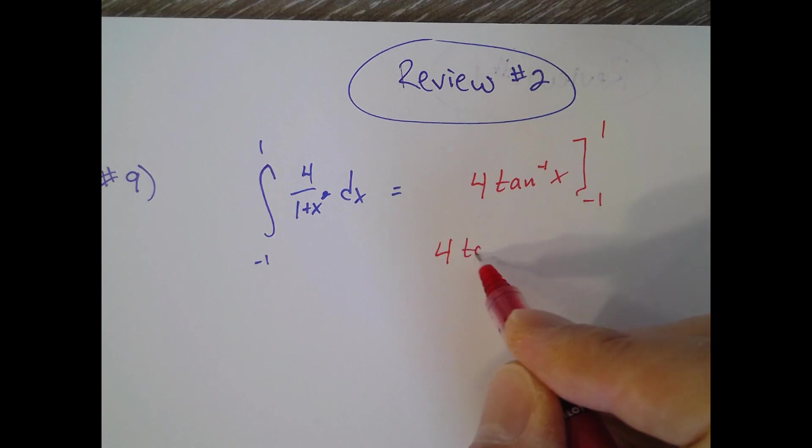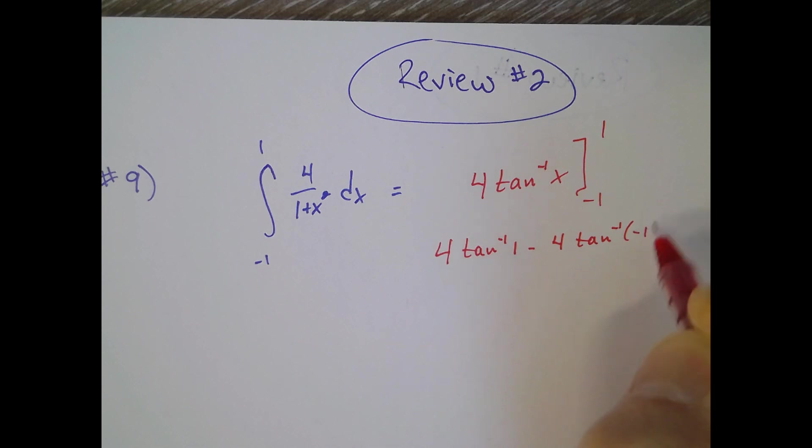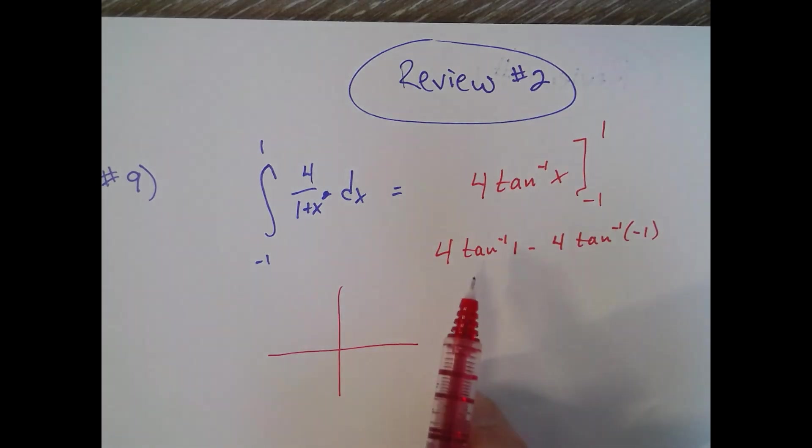Four inverse tangent of one minus four inverse tangent of negative one. So what is the inverse tangent of one? Anytime you're using an inverse trig, it's always asking what angle has a - in this case, what angle has a tangent of one.